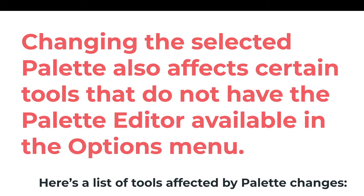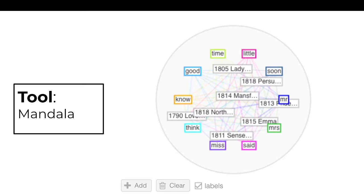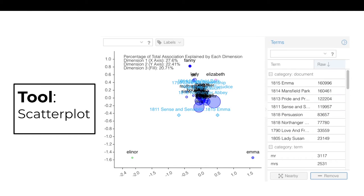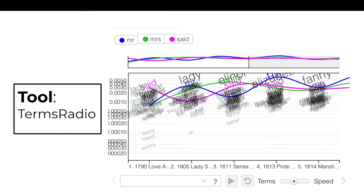Changing the selected palette also affects certain tools that do not have the palette editor available in the Options menu. Here is a list of tools that are affected by palette changes: Loom, Mandala, Scatter Plot, Stream Graph, and Terms Radio.